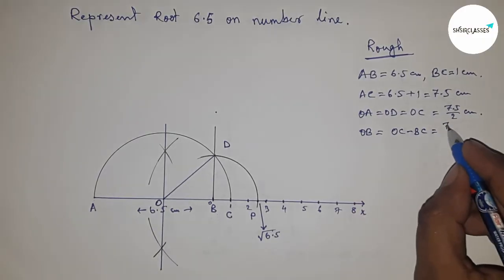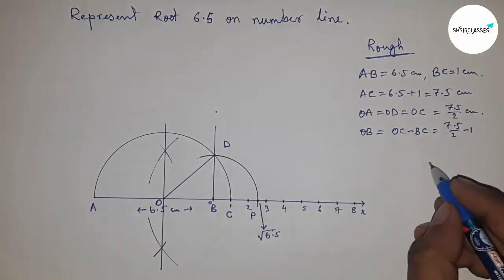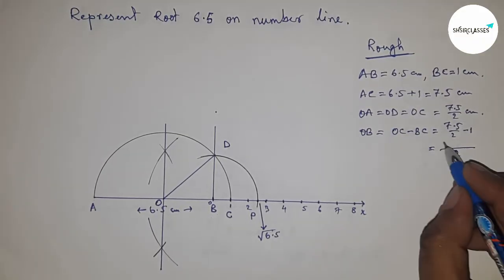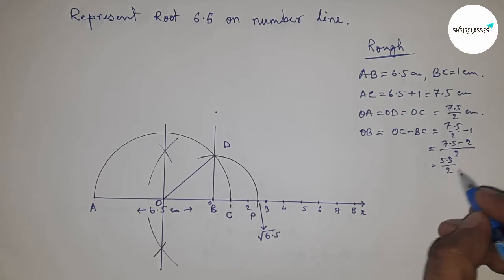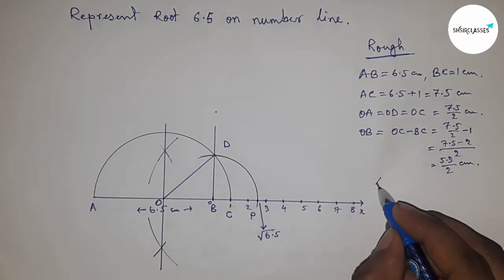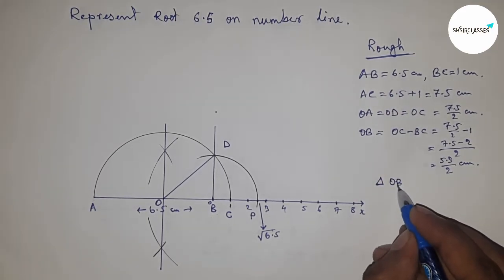OB equals OC minus BC. Putting the values of OC and BC and calculating this, we get 5.5 by 2 centimeters. In right triangle OBD,